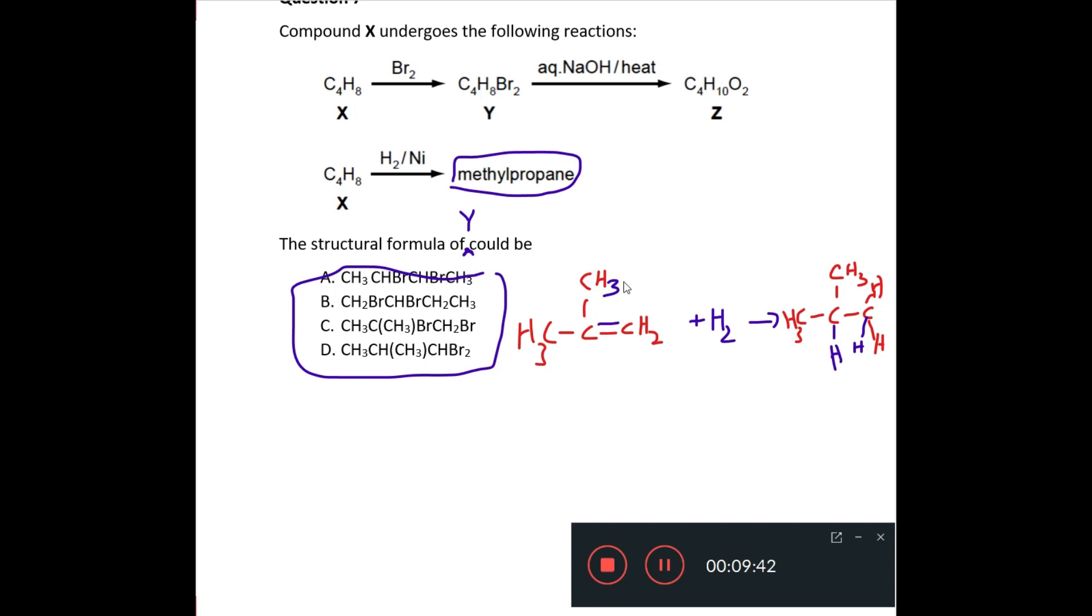So, if methylpropene is your original molecule X, then Y has to have the bromine also added where you would get the hydrogens. So, for Y, what you would have is the bromine atoms here and here, and so you have to look for the structure that has that, and the structure that has that is C. C is your answer.